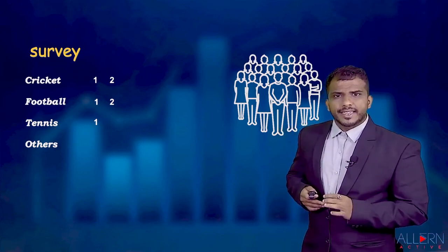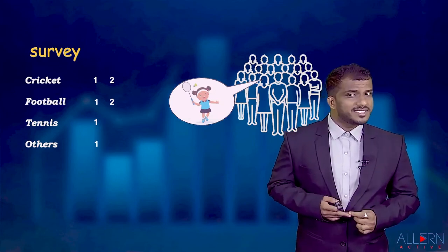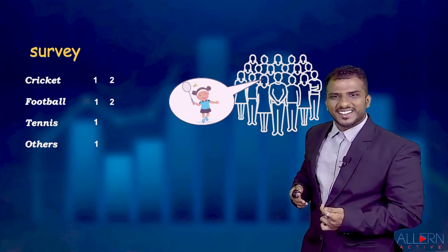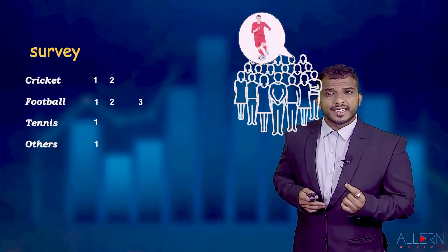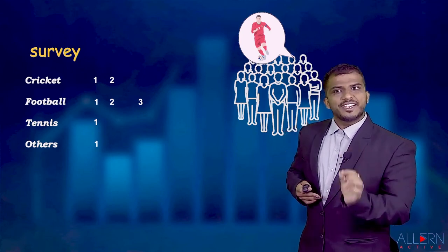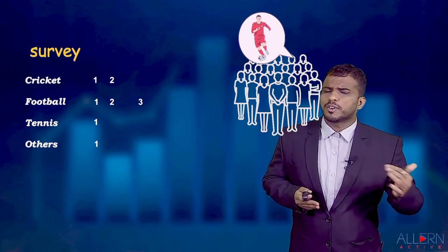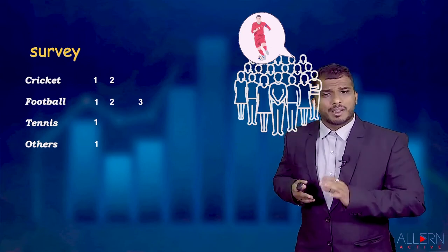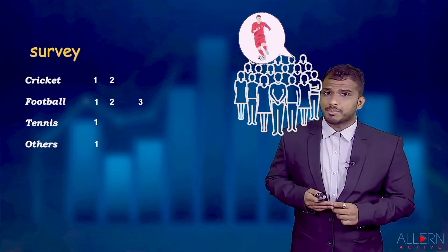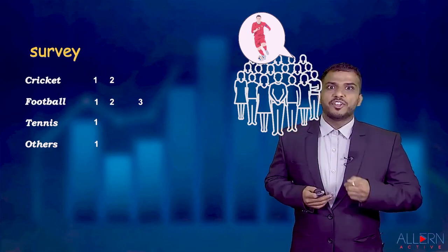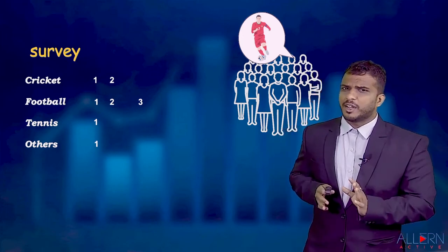But what happens as we interview more and more people? The next person likes badminton, so we include them under 'others'. The one after that likes football, so we write number three for football. As the numbers keep increasing, it becomes troublesome to keep adding numbers to this list.